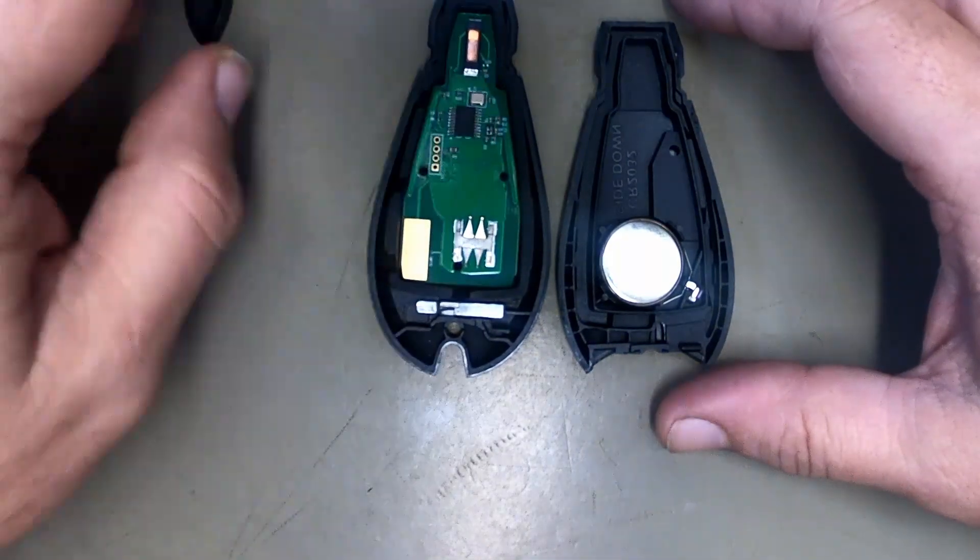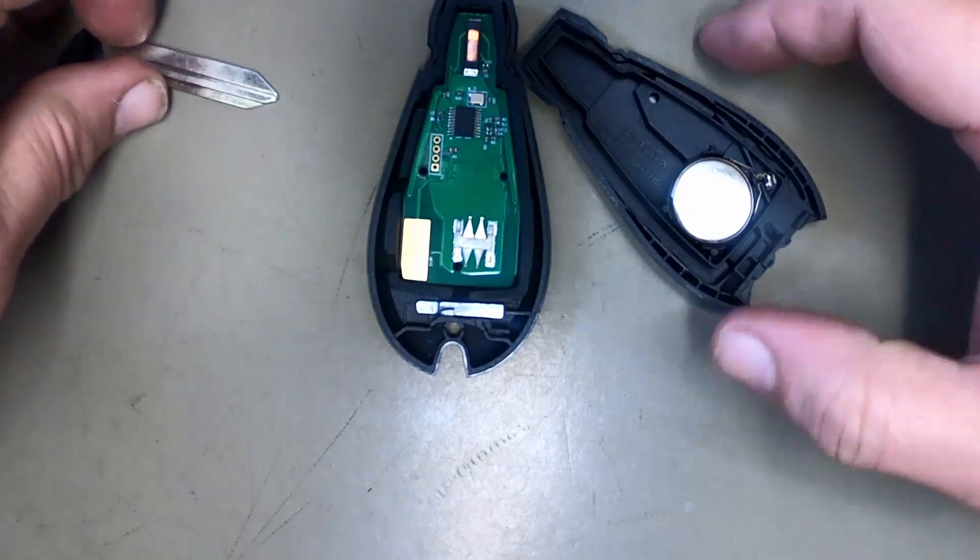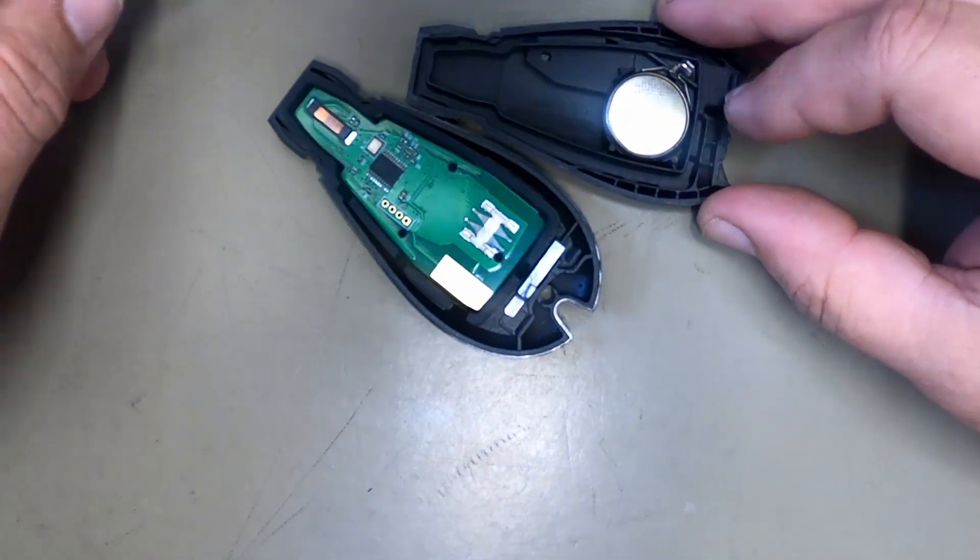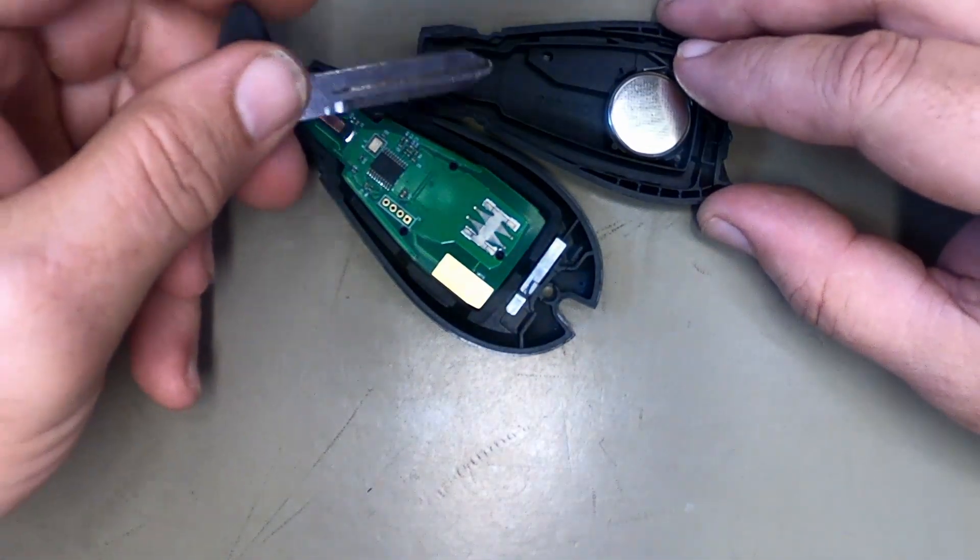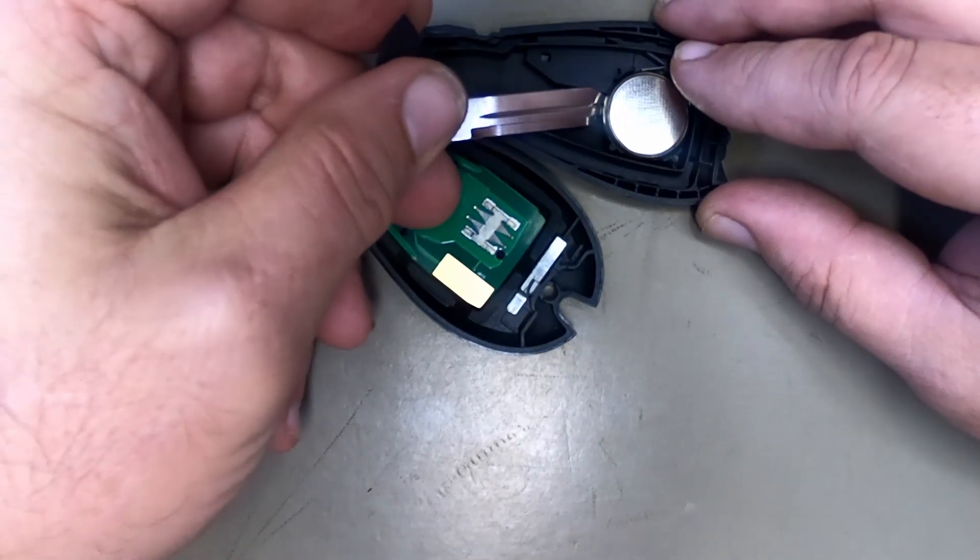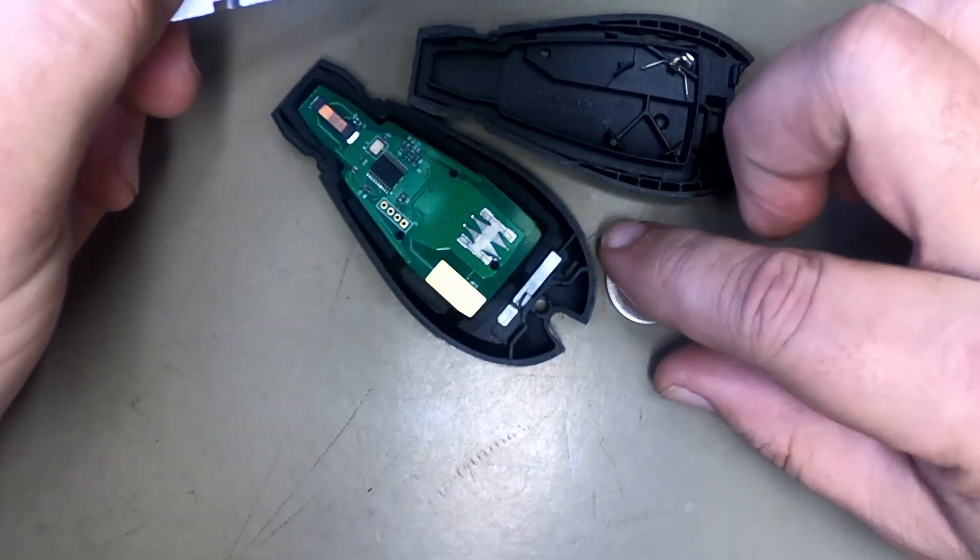Turn it around, push your circuit board in to make sure it's seated. Take your emergency blade again. Put your finger right here on the spring because you want to hold the battery retainer in. Pop it up. Battery pops out.